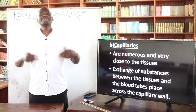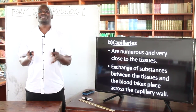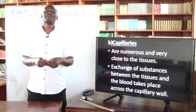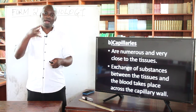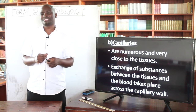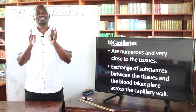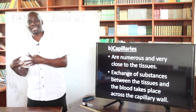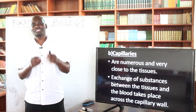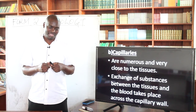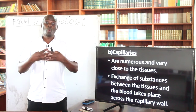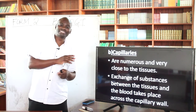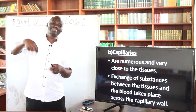Capillaries are normally very numerous in number, and they are close to the body tissues — they are the ones that run into the body tissues. Exchange of substances between the tissues and the blood takes place across the wall of the capillaries. This shows that the walls of the capillaries are permeable; they can allow substances to pass across.